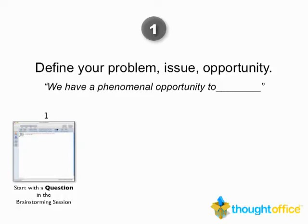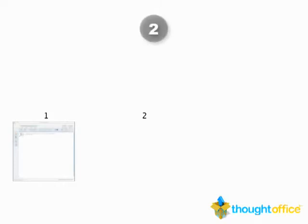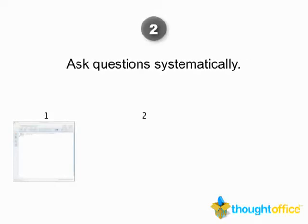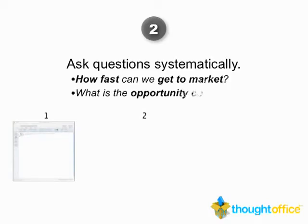In your brainstorming session, I started with that question that's up in the upper left there. From there we want to be able to really crisply define this problem or opportunity. The best way to do that is to ask questions systematically — not haphazardly, but from the first to the last. The interface is designed to support that kind of input.